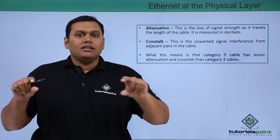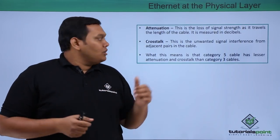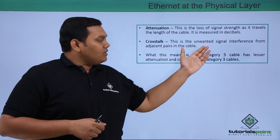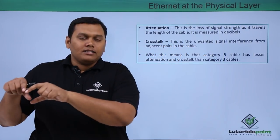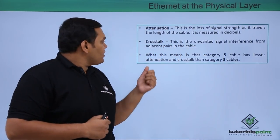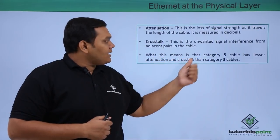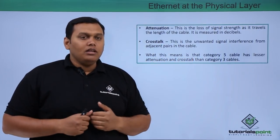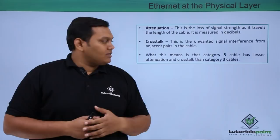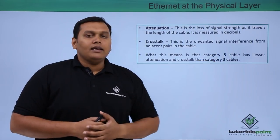If a cable is present, crosstalk causes unwanted signal interference through adjacent coaxial cables. Category 5 cable has lesser attenuation and crosstalk than Category 3 cables.